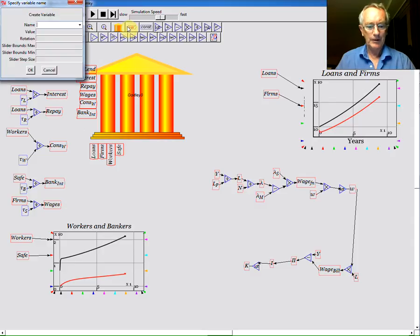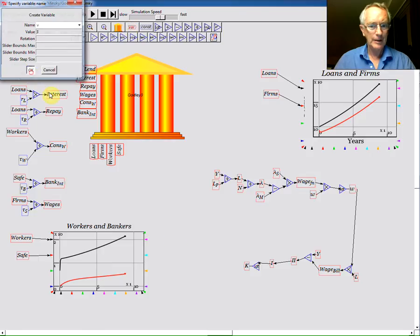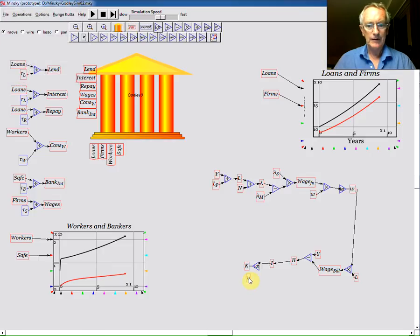Then bringing a capital output ratio, I'll use V, which is quite common for the accelerator in economics. So K divided by V, I'll need a divide block. Bring that down here. And I now have K divided by V is going to be the level of output. Now let's just move that wire out of the way, and I'll just move some of these elements down.